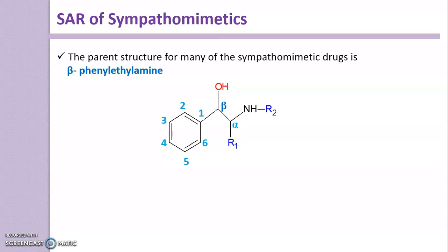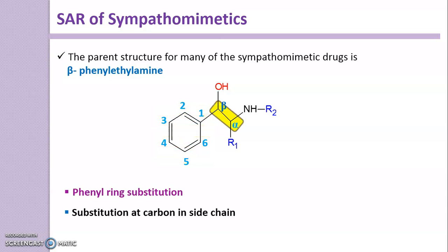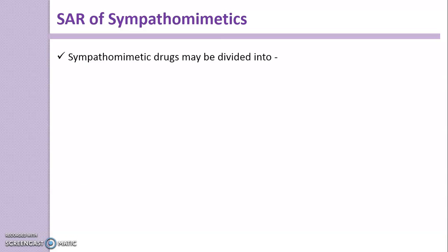The SAR of Sympathomimetics is studied by considering three different substituents: phenyl ring substitution, substitution at carbon in the side chain, and substitution at nitrogen. These are the three points considered for discussion of Structural Activity Relationship. But before going into the SAR, you must know a few points regarding Sympathomimetic drugs.